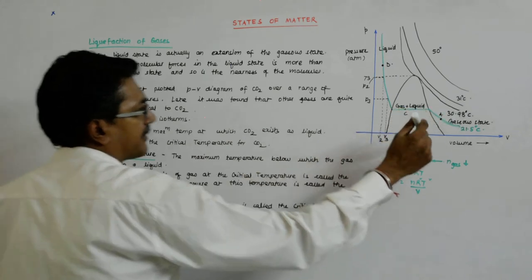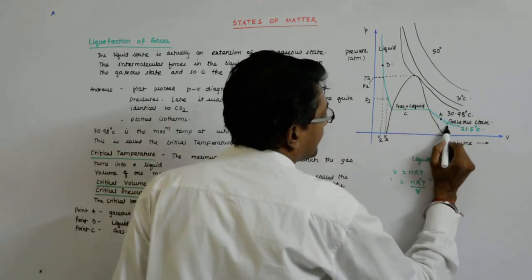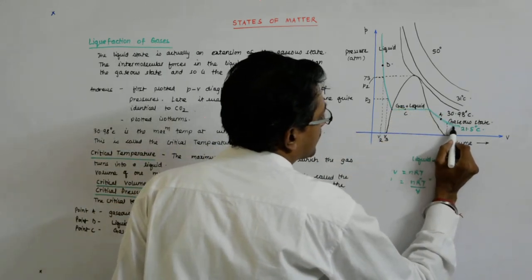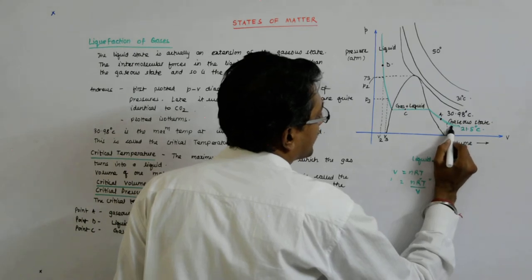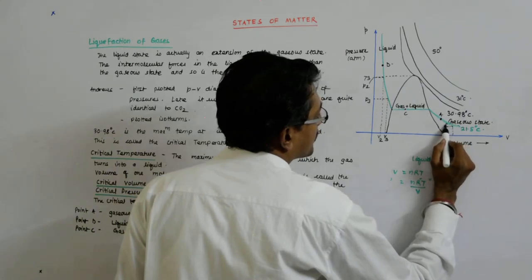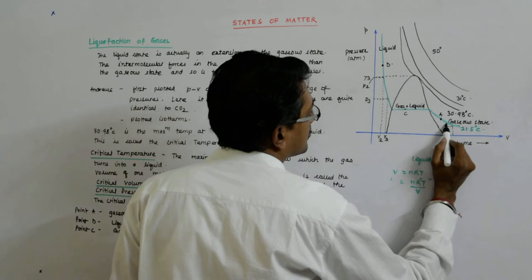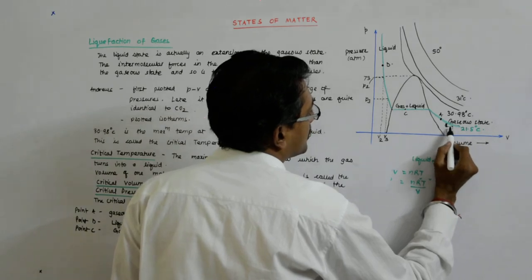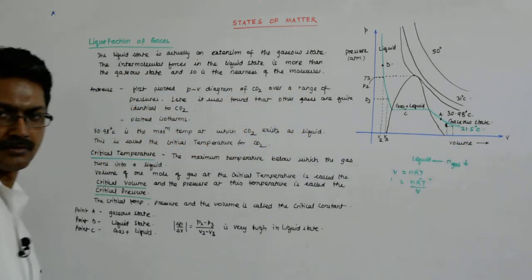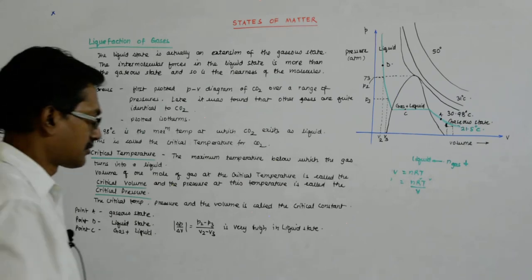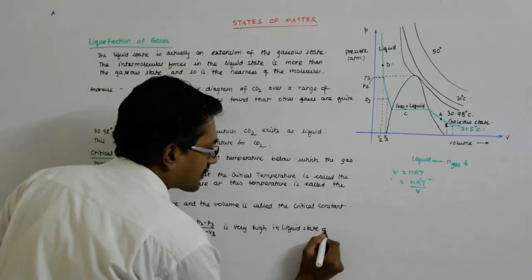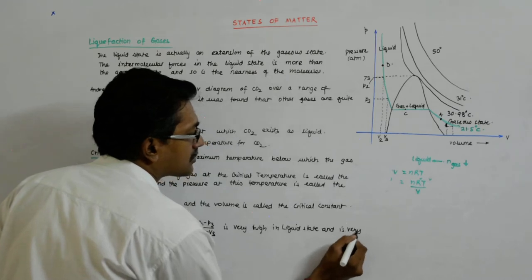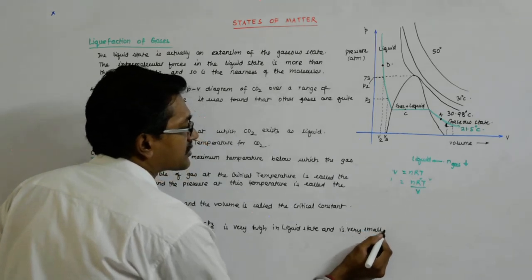That's why liquid state. This is lower here. So the same volume change maybe would have demanded only this much change in pressure in the gaseous state. Delta P upon delta V is very small in gaseous state.